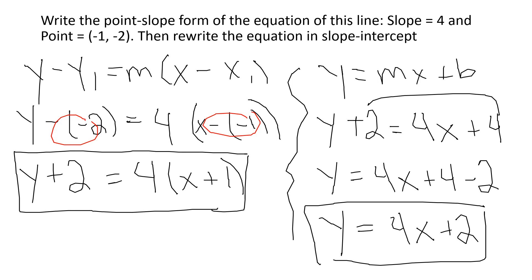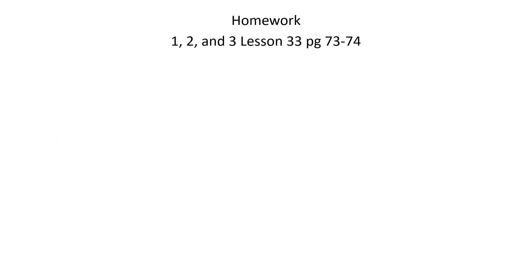Write those equations down — they're in your textbook. Your two steps are: plug in your values and simplify the formula into point slope form, then solve for y to get it in y equals mx plus b form. Homework is going to be pages 73 and 74. You need to do problems one, two, and three — that's the classwork we just did — and then activities two and three on pages 73 and 74.